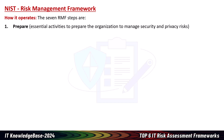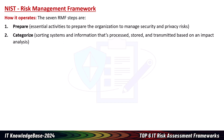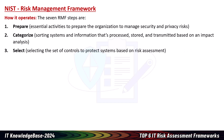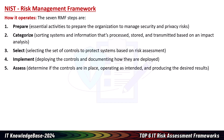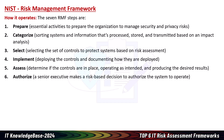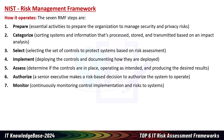The seven RMF steps are: Step 1 — Prepare: essential activities to prepare the organization to manage security and privacy risks. Step 2 — Categorize: sorting systems and information processed, stored, and transmitted based on an impact analysis. Step 3 — Select: selecting the set of controls to protect systems based on risk assessment. Step 4 — Implement: deploying the controls and documenting how they are deployed. Step 5 — Assess: determining if the controls are in place, operating as intended, and producing the desired results. Step 6 — Authorize: a senior executive makes a risk-based decision to authorize the system to operate. Step 7 — Monitor: continuously monitoring control implementation and risk to systems.